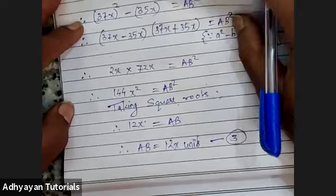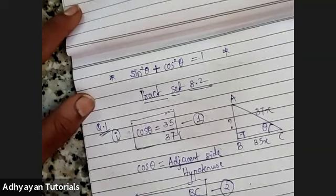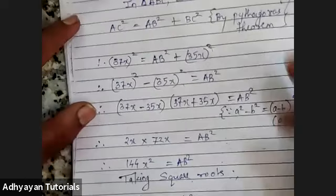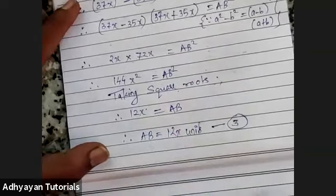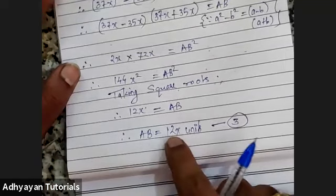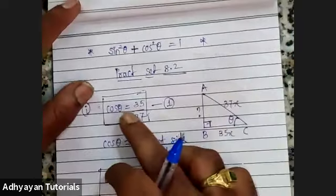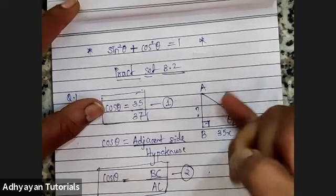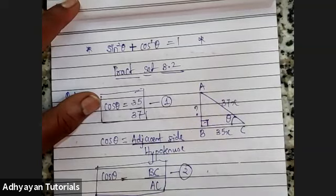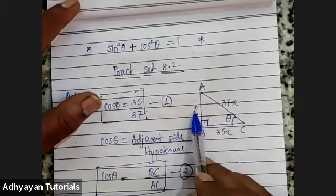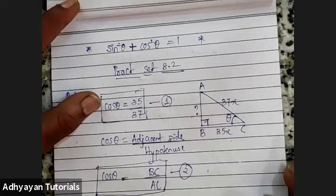This is question number 1, first sub-question. Since we have AB = 12x and cos θ was given, we needed to find sin θ and tan θ. Sin θ = opposite upon hypotenuse = AB upon AC = 12x upon 37x. X, X gets cancelled, so sin θ = 12/37. Tan θ = opposite upon adjacent = 12x upon 35x = 12/35. That easy.